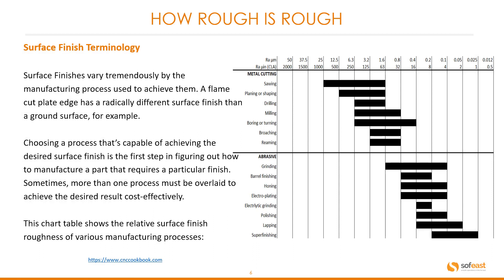Surface finishes vary tremendously by the manufacturing process used to achieve them. A flame-cut plate edge has a radically different surface finish than a ground surface, for example. Choosing a process capable of achieving the desired surface finish is the first step in figuring out how to manufacture a part that requires a particular finish. Sometimes more than one process must be overlaid to achieve the desired result cost-effectively.